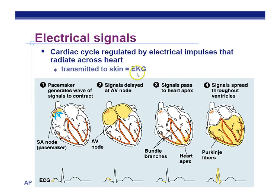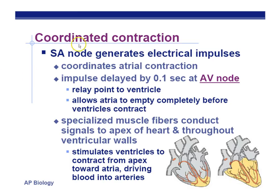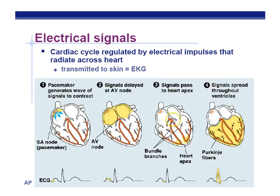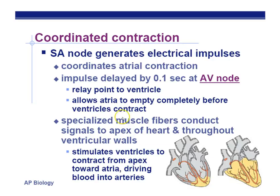ECG and EKG mean the same thing — both mean cardiogram. For coordinated contraction: the SA node generates the electrical impulse, the AV node delays it to give the ventricles a chance to fill up, and then the signal goes to the bottom of the heart and contracts the ventricles.